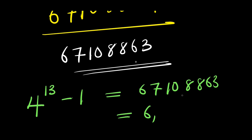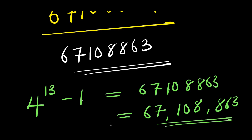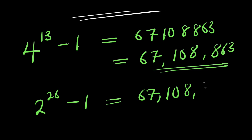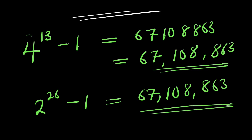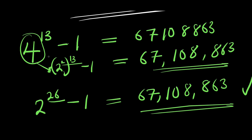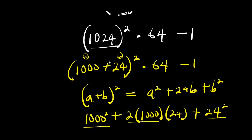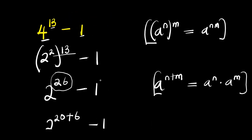So the value of 4 to the power of 13 minus 1 equals 67,108,863 — and we have achieved this without the use of a calculator. This is also the same as 2 to the power of 26 minus 1, which is still 67,108,863, because 4 is a perfect square equal to 2 squared, raised to the power of 13, so 2 times 13 is 26. Therefore 2 to the power of 26 minus 1 equals 4 to the power of 13 minus 1, which is 67,108,863. Guys, this is how you can evaluate this without a calculator — don't forget to subscribe and share. Thank you and goodbye.